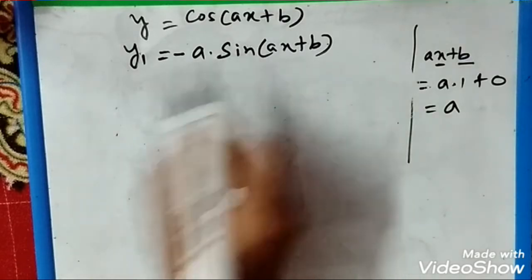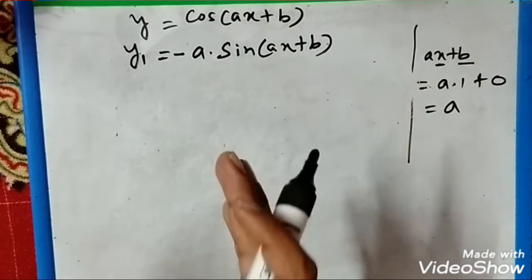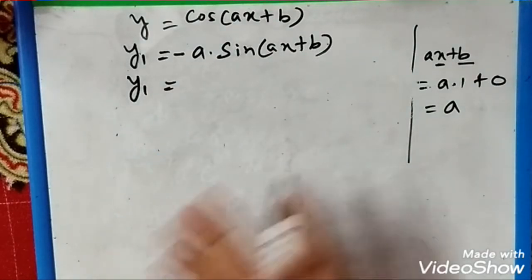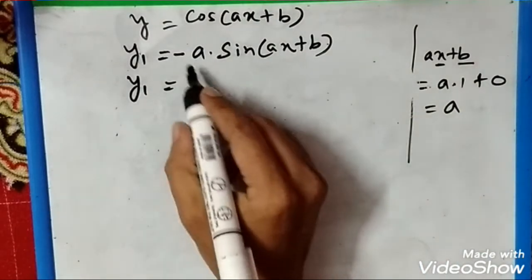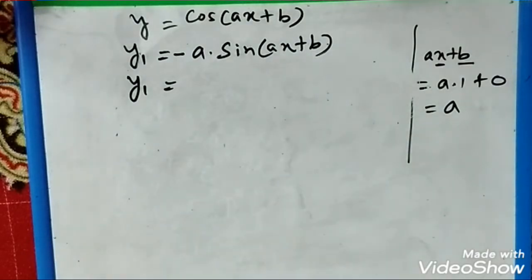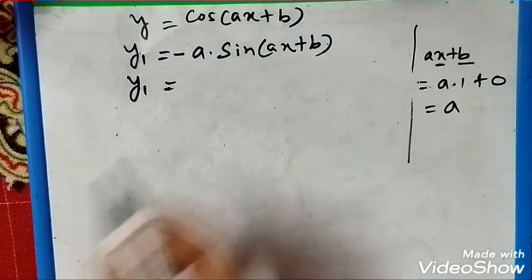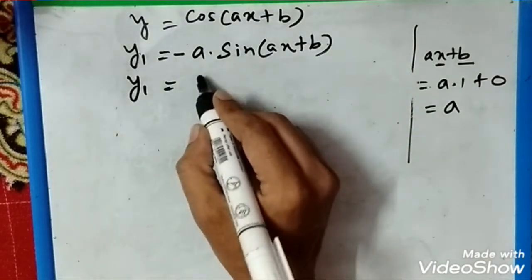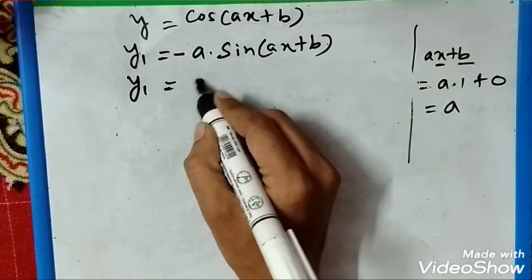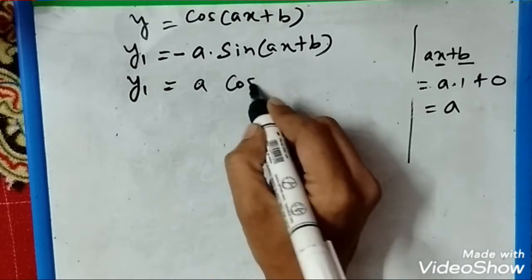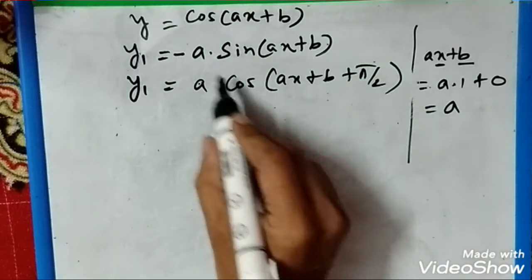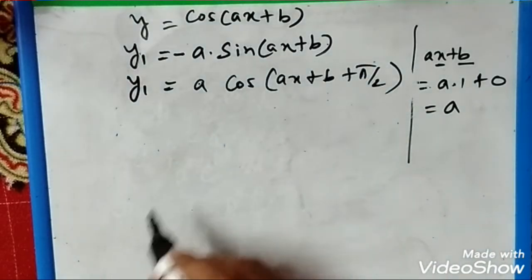But we need to remove this negative sin so we can have an easier answer. We will use the trigonometric identity: -sin equals cos(θ + 90°). Therefore, it becomes y1 = a cos(ax + b + 90°), which gives us -a sin(ax + b).